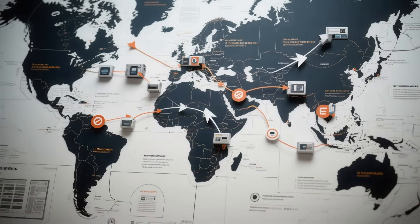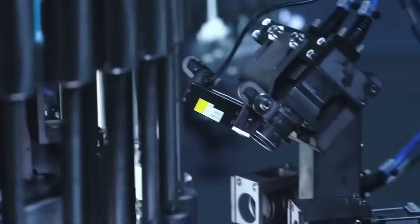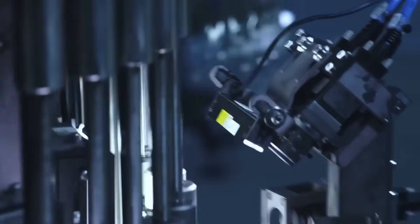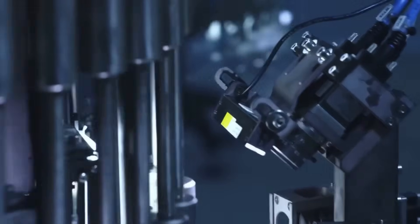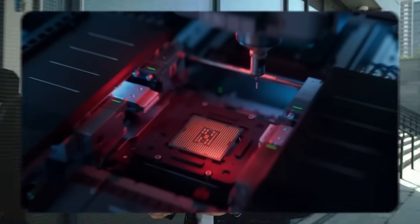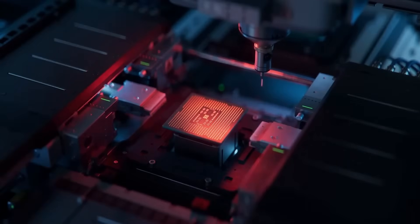The American strategy was simple. Control the lithography equipment, and you control who can manufacture advanced chips. Cut off China's access and freeze their technological development. Washington believed this would maintain America's chokehold on the most important technology of the 21st century. They were wrong.